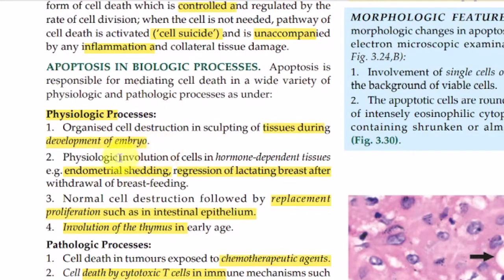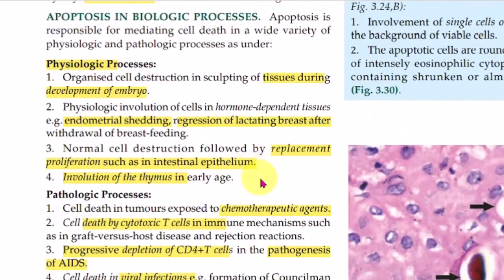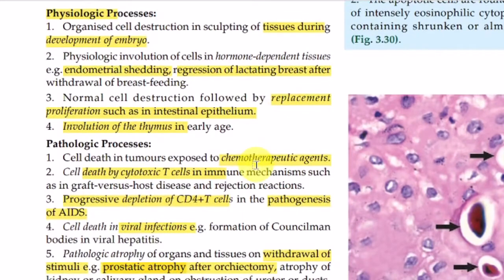Another physiological apoptosis occurs in the menstrual cycle — endometrial shedding. Also, after lactation, when the baby stops sucking, the breast goes into the stage of apoptosis and its size decreases. In our intestinal epithelium, it is a continuous process — the epithelium develops and old cells die, meaning regeneration of the intestinal epithelium. The thymus gland is very important in early life; in later stages of life each cell goes into apoptosis and its size is reduced.